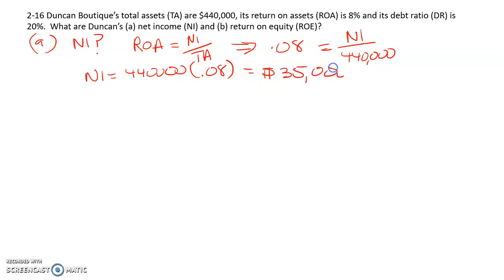So our net income is $440,000 times 0.08, which is $35,000. Now part B is return on equity. The problem tells us that the debt ratio is 20%, which tells us that common equity is 80%.